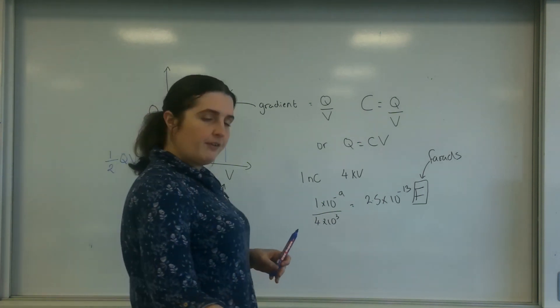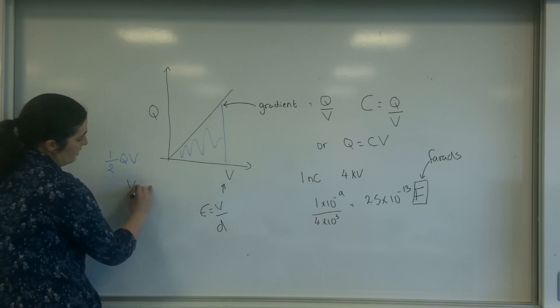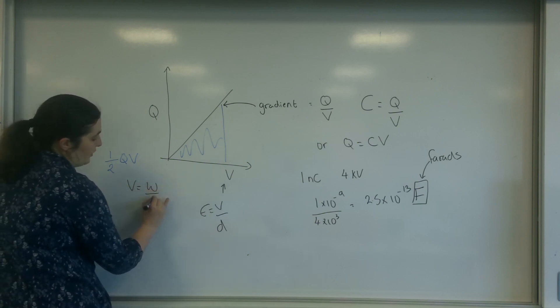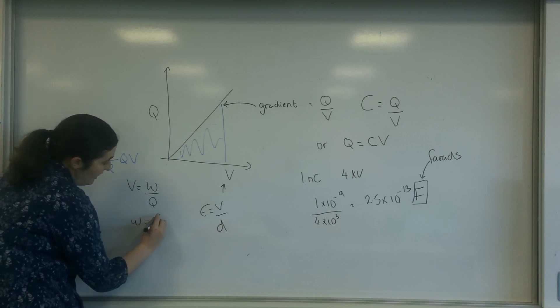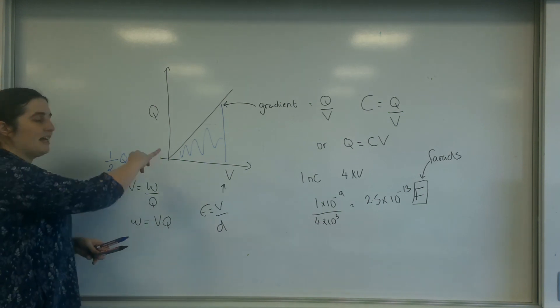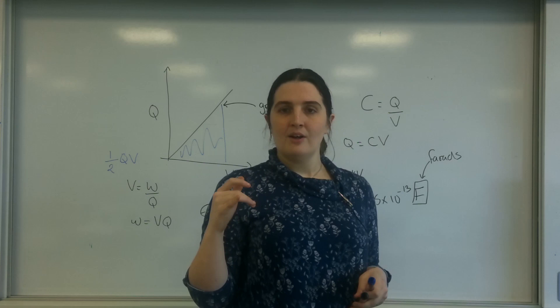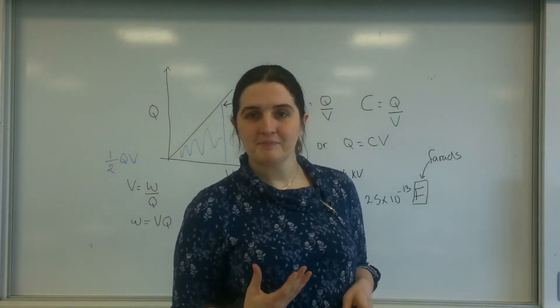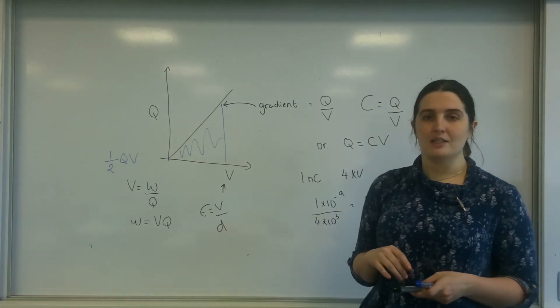And if I actually have a look at potential, potential is energy over charge. So energy is potential times charge. So what it's telling me here is that this here is the energy in a capacitor. Okay, so this area under the graph is the capacitor.